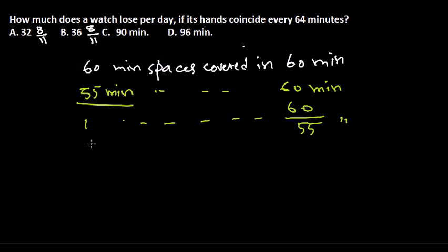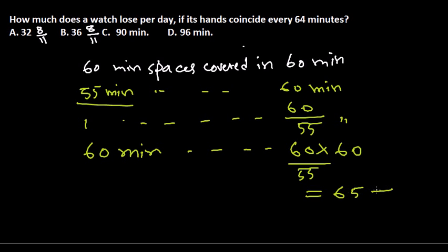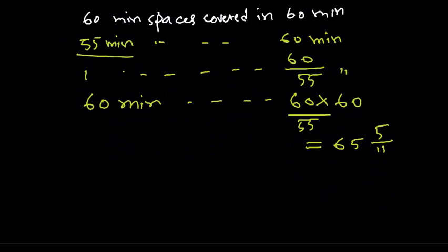So one minute space will be covered in 60/55 minutes. Then if we look at 60 minutes, the spaces covered in that clock will be 60 times 60 divided by 55, which gives us 65 and 5/11.